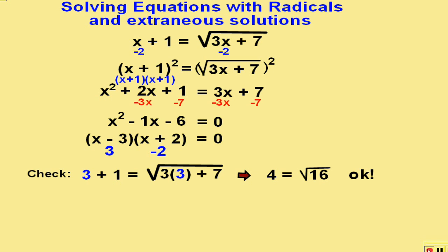However, when we substitute negative 2 in for x, it doesn't work. Negative 1 does not equal the square root of 1. Therefore, negative 2 is called an extraneous solution, which means it doesn't work. So our only solution is 3.